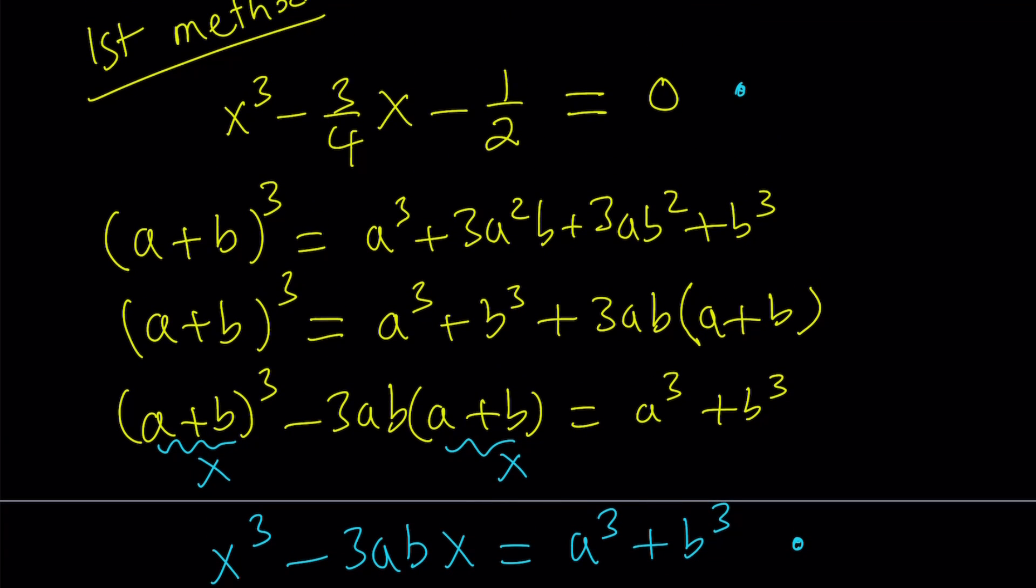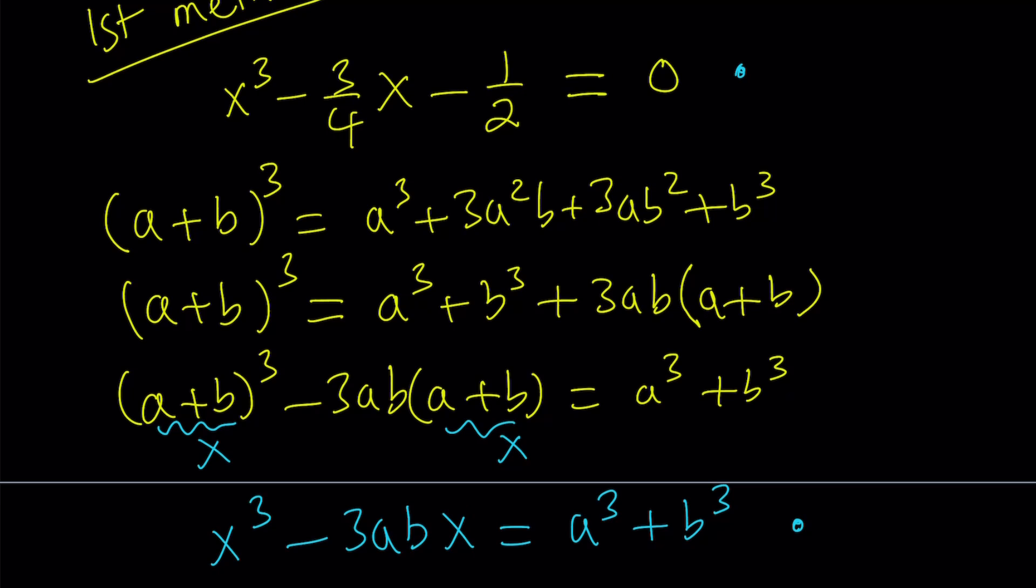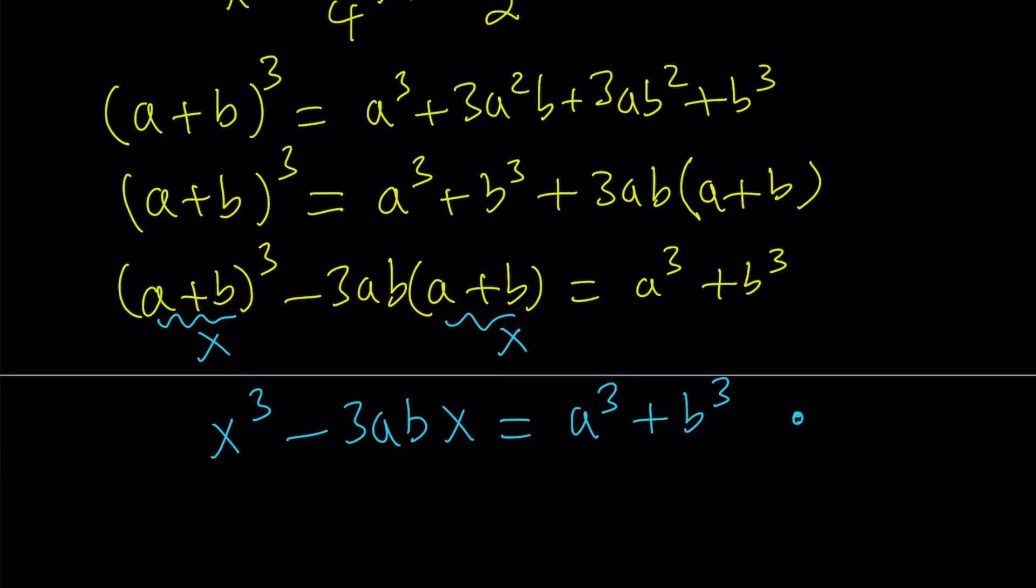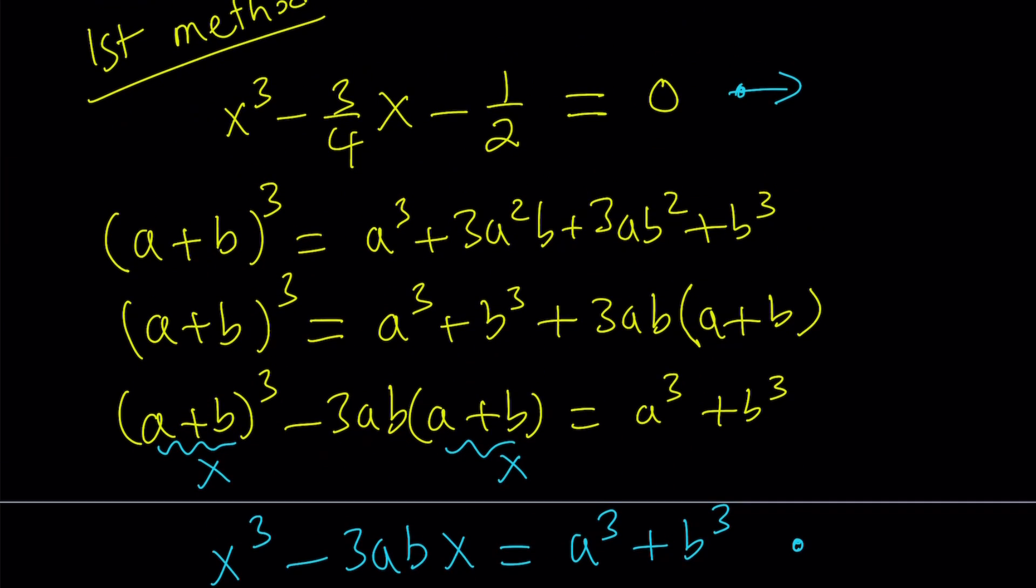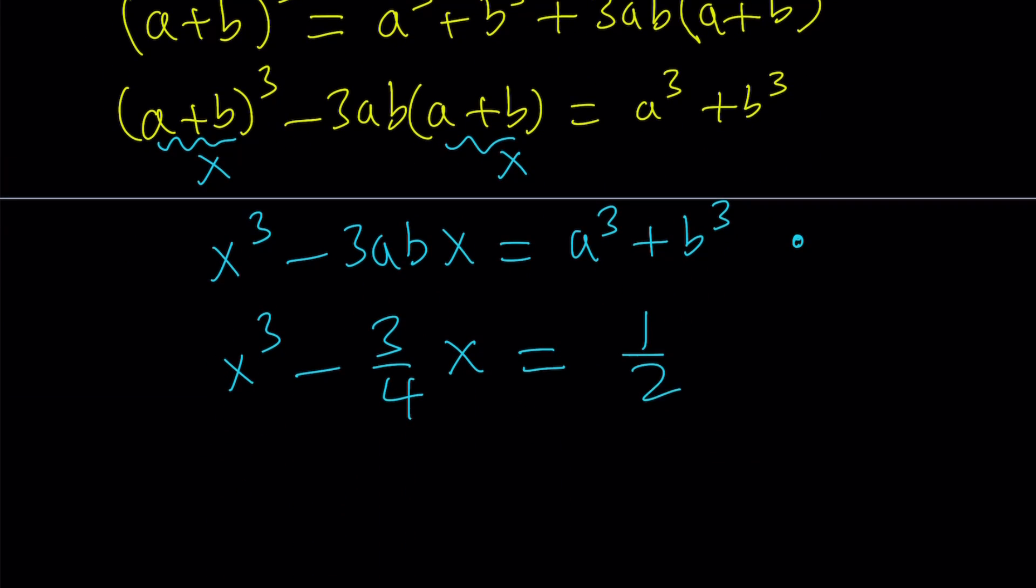So now if you compare this equation to this one, you'll notice that the coefficient of x here is negative 3ab, and the coefficient of x here is negative 3 fourths. And the constant term is on the right hand side, so we're going to go ahead and add 1 half to both sides of this equation, and we're going to get x cubed minus 3 fourths x equals, and we have 1 half on the right hand side. Awesome.